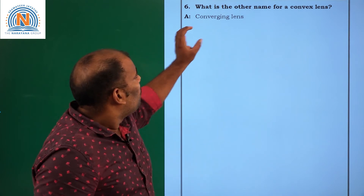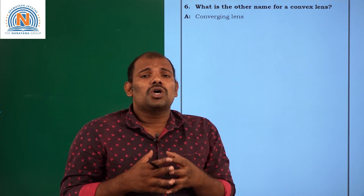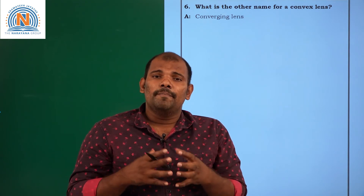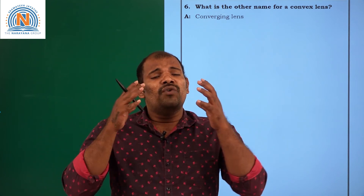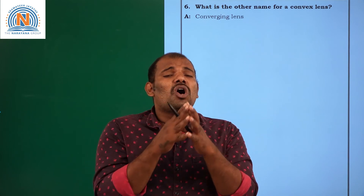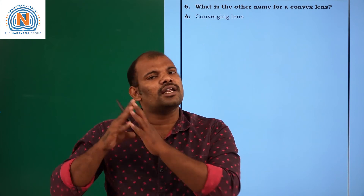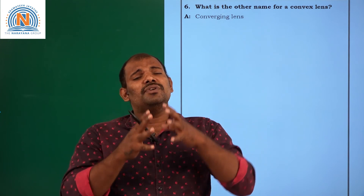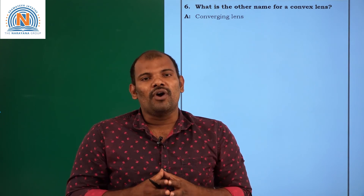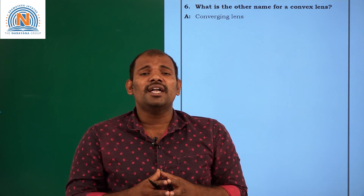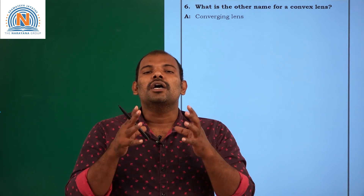Question number 6: What is the other name of a convex lens? A convex lens is also called a biconvex lens or a converging lens. Why is a convex lens called a converging lens? Because wherever you place the object, the rays coming from it will mostly converge at a point after refraction — except in one condition, which we will discuss in the next session. That is why the convex lens is called a converging lens.